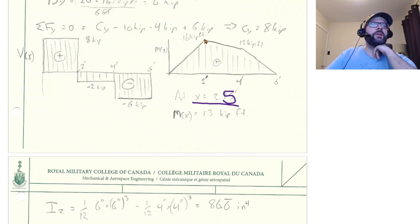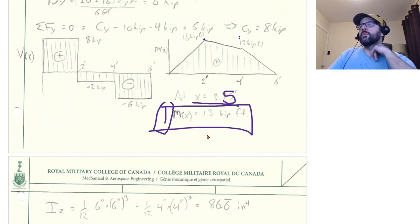The drop there is four, the drop from here to here is four kip feet. So three quarters of that way will drop three kip feet, which means that we are worried about the moment, the point that we're worried about has a moment of 13 kip feet.